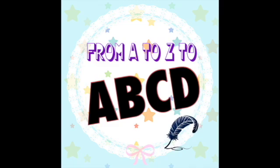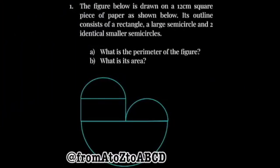Hello! Welcome to ABCD. Today, we'll be solving another math question. The figure below is drawn on a 12cm square paper as shown below. Its outline consists of a rectangle, a large semicircle and two identical smaller semicircles. What is the perimeter of the figure and what is its area?